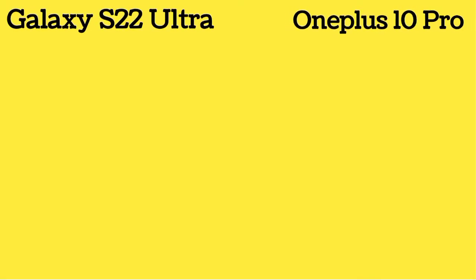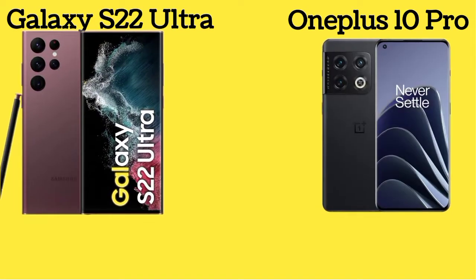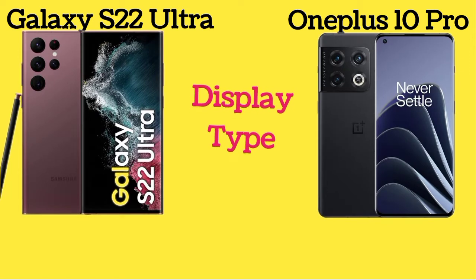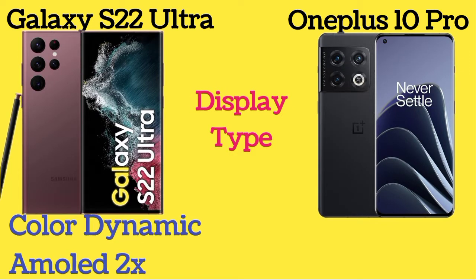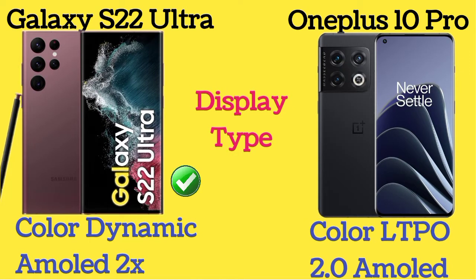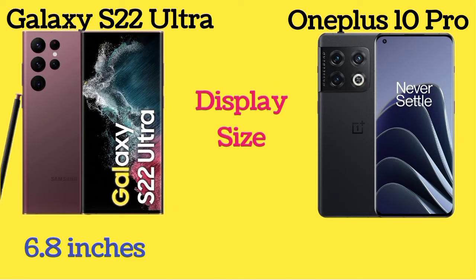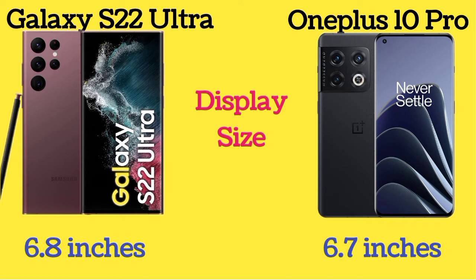Galaxy S22 Ultra has a Color Dynamic AMOLED display and OnePlus 10 Pro has a Color LTPO 2.0 AMOLED display. Galaxy S22 Ultra has a 6.8 inch display and OnePlus 10 Pro has a 6.7 inch display.